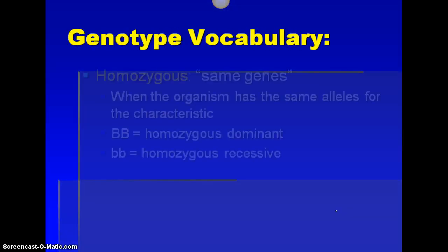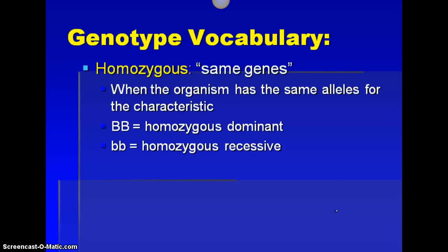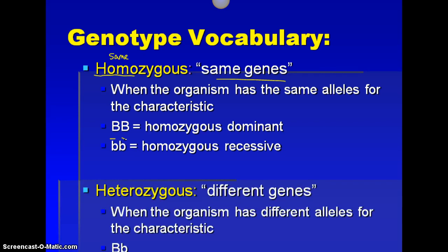A couple more terms. We have homozygous, which means same genes — homo means same. It can be one of two things: big, big, which is homozygous dominant, or little, little, which is homozygous recessive. Heterozygous means different genes — hetero means different. The organism has different alleles for the characteristic, meaning they have a big letter and a little letter. Anytime you see heterozygous, that just means big letter, little letter.